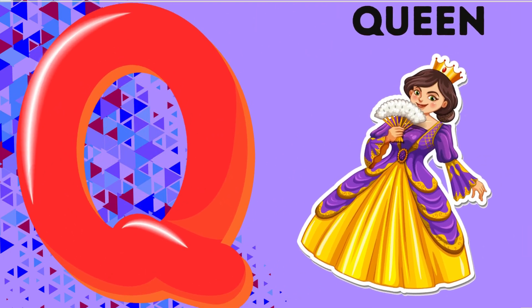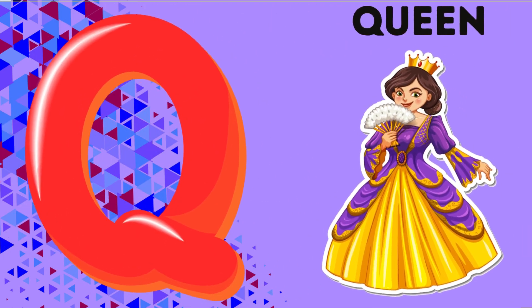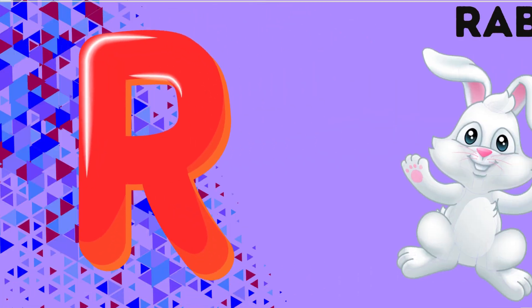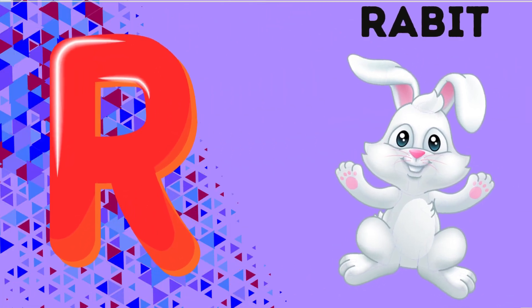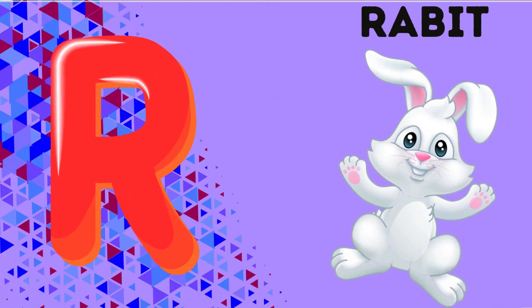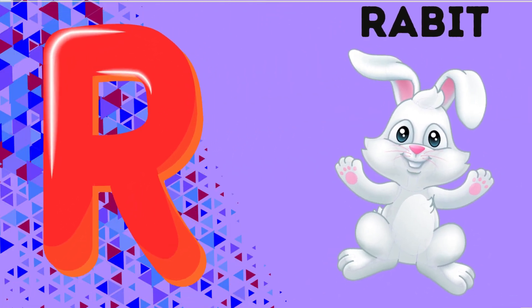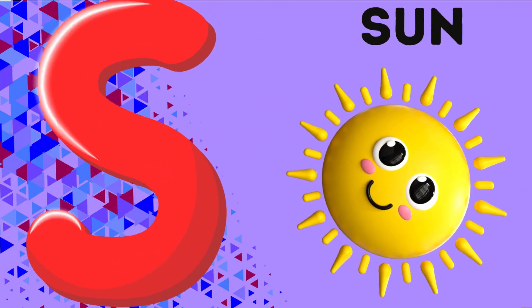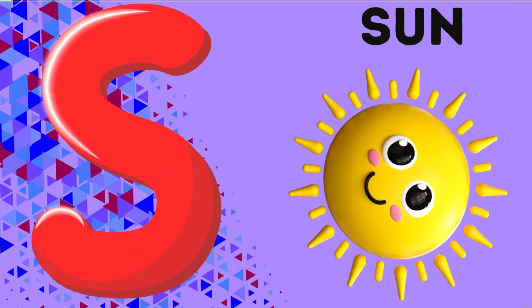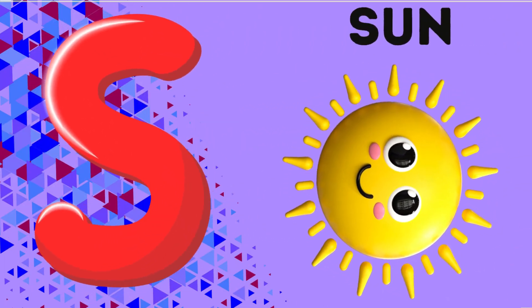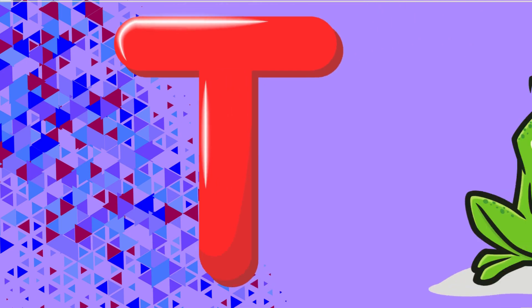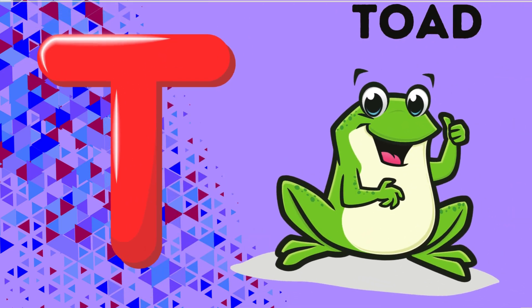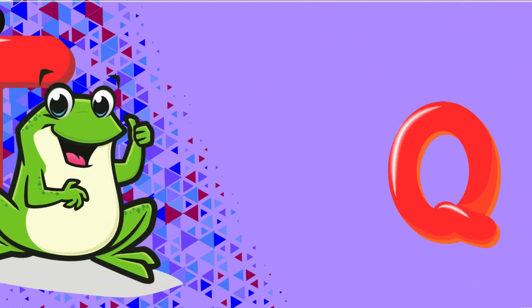Q is for queen, qu-qu-queen. R is for rabbit, r-r-rabbit. S is for sun, s-s-sun. T is for toad, t-t-toad.